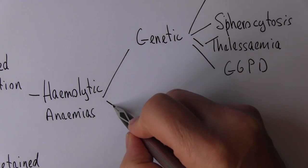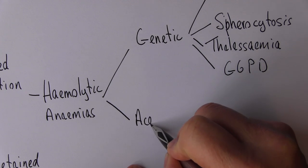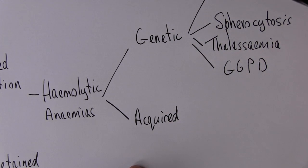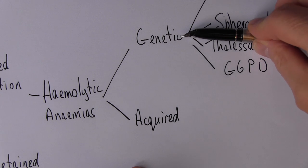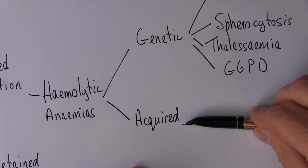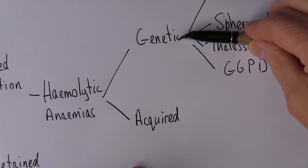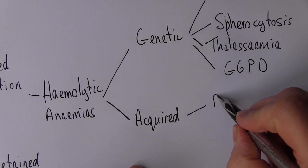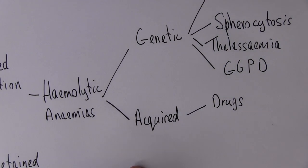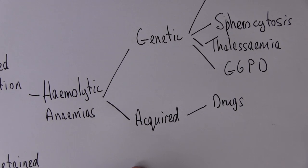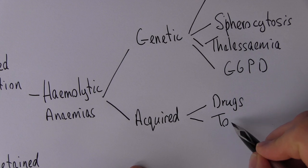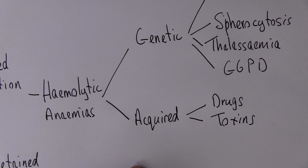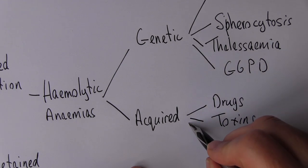And the other forms are acquired, or if you like using terminology from previous videos, these are endogenous factors and these are exogenous factors. These arise from within the individual, these arise from outside the individual. For example, some drugs can lead to idiosyncratic hemolytic reactions, as can some toxins, some snake venoms for example. A range of infections can lead to hemolysis.